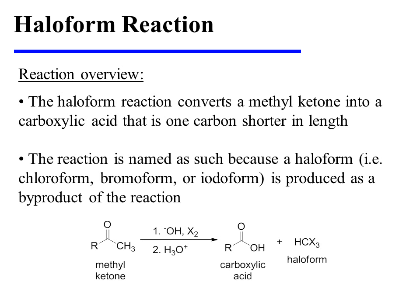The haloform reaction converts a methyl ketone into a carboxylic acid that is one carbon shorter in length. The reaction is named as such because a haloform, such as chloroform, bromoform, or iodoform, is produced as a byproduct of the reaction.